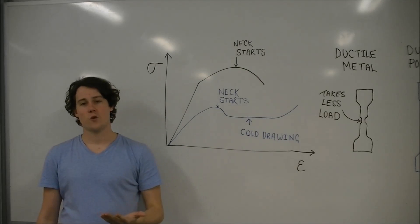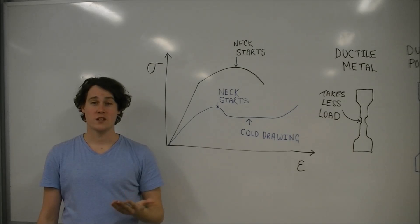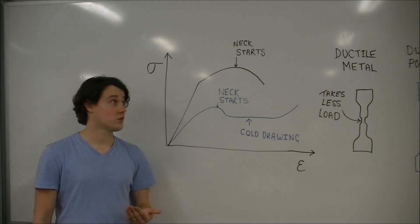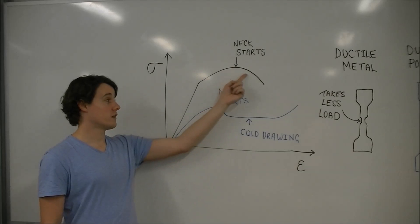After a neck forms in a ductile metal, the region now has a smaller cross section, and as a result, the neck can't take as much load. As the neck is now the weakest part of the sample, further deformation continues at the neck, and so its cross section continues to reduce, and so the load it can take reduces.